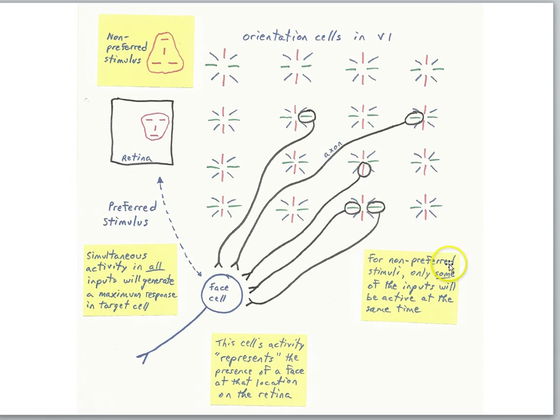They're not going to be activated because the features of the face won't activate that same set of orientation cells in the visual cortex. So non-preferred stimuli will show a reduced response. So the cell becomes selective for a certain face, not other faces.